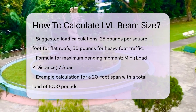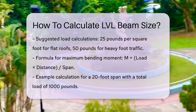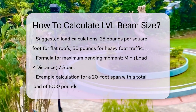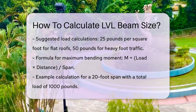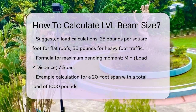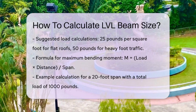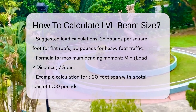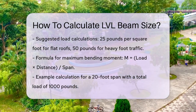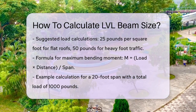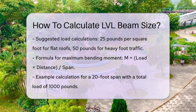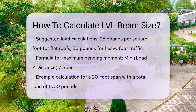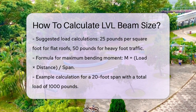You also need to calculate the section modulus of the beam, which is necessary to resist the bending moment. The formula for this is S equals beam width times beam depth squared divided by 6. This ensures the beam's strength matches the wood type used.